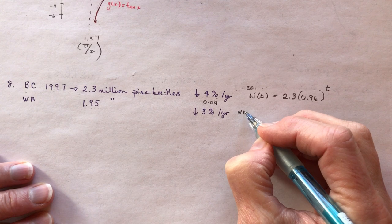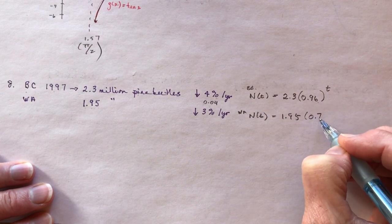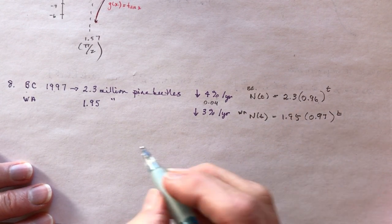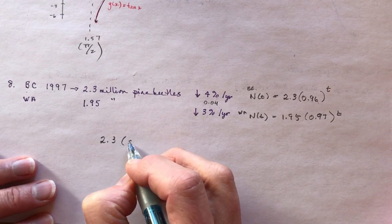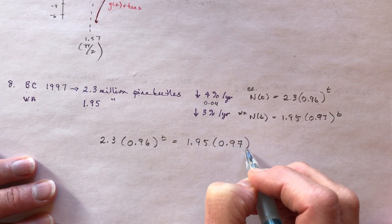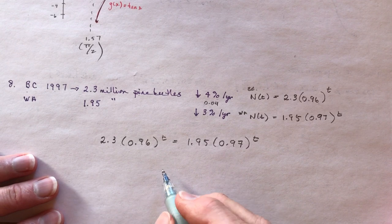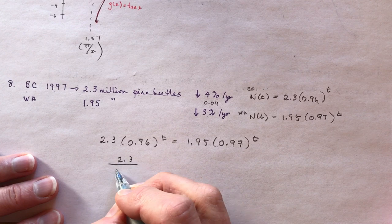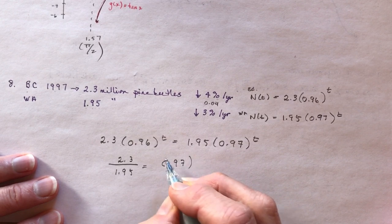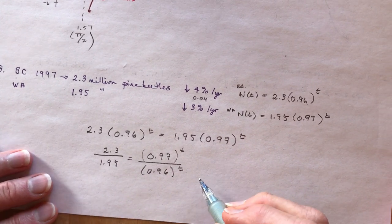For Washington state: N(t) = 1.95 × (0.97)^t. Setting them equal: 2.3 × (0.96)^t = 1.95 × (0.97)^t. Rearranging: 2.3/1.95 = (0.97)^t / (0.96)^t = (0.97/0.96)^t.